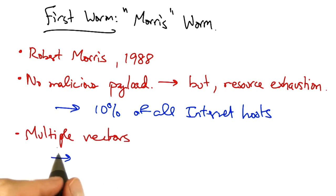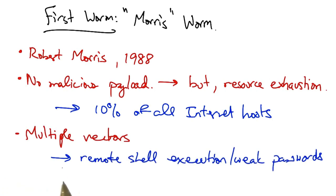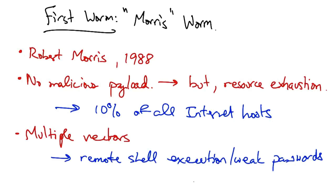It spread through three different propagation vectors. The worm tried to crack passwords using a small dictionary and a publicly readable password file, and also targeted hosts that were already listed in a trusted host file on the already-infected machine. This ability to perform remote execution was one way that the worm was allowed to spread.